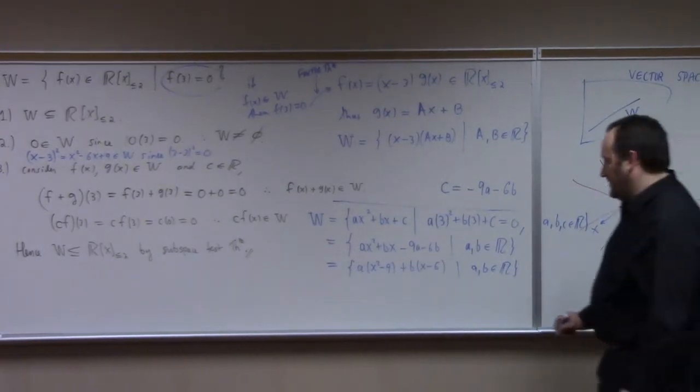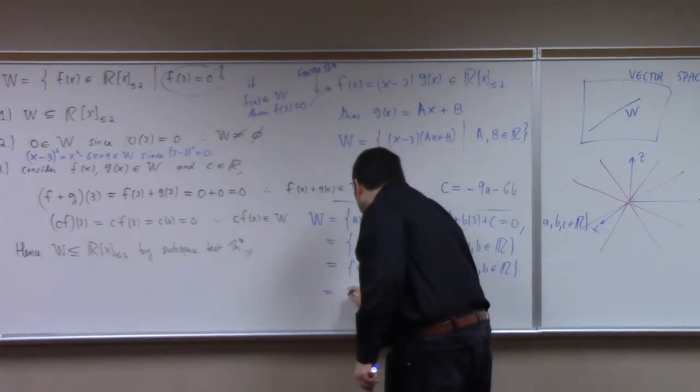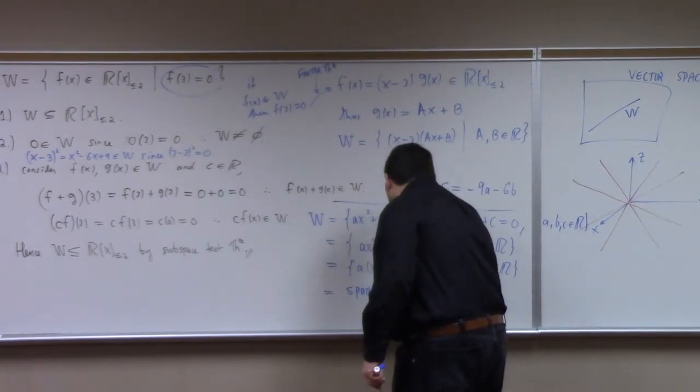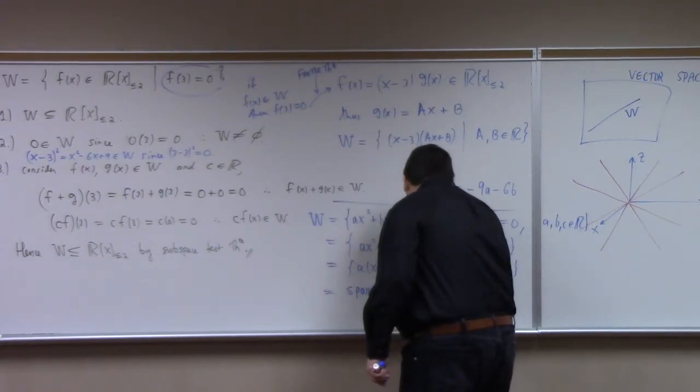So apparently w is the span. It's the span of x squared minus 9 and x minus 6.